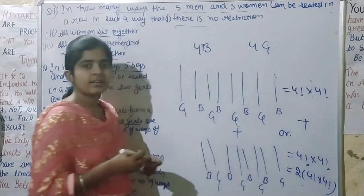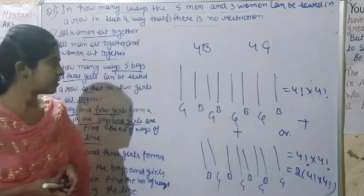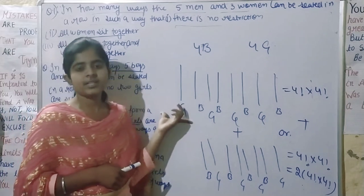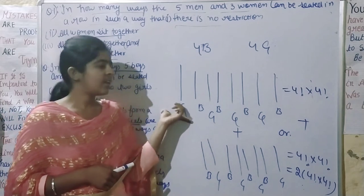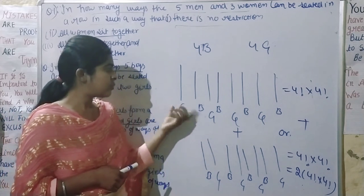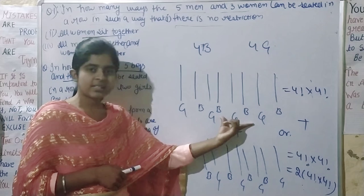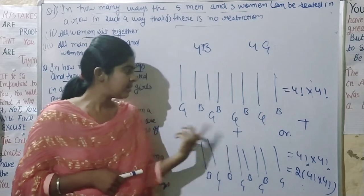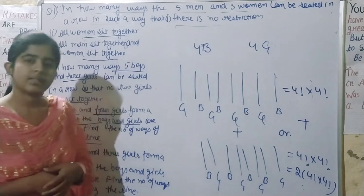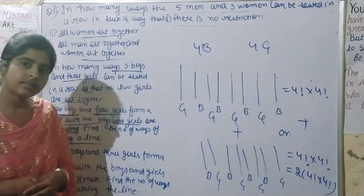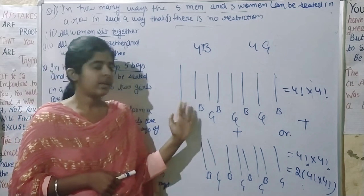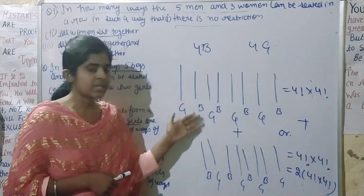This is the answer because we have 2 choices for the alternating arrangement. If we start with a boy the pattern is boy-girl-boy-girl, and if we start with a girl it is girl-boy-girl-boy — so 2 into 4 factorial into 4 factorial.